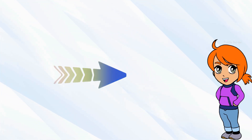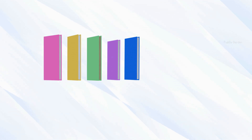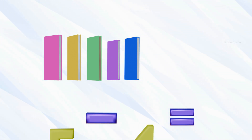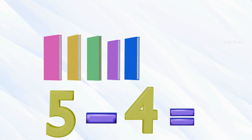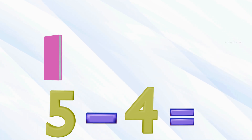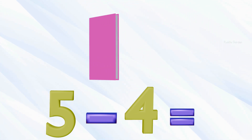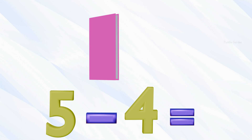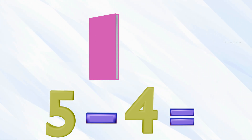I'm going to jump off screen now, but don't worry, I'll be just around the corner. If we have five books and we want to subtract four of those, that means we're going to take away four. We're left with one. So five subtract four equals one.